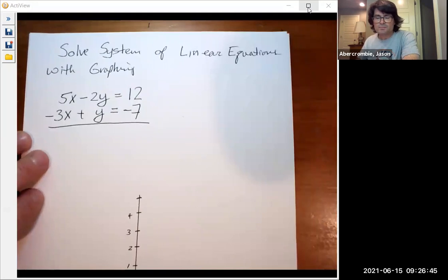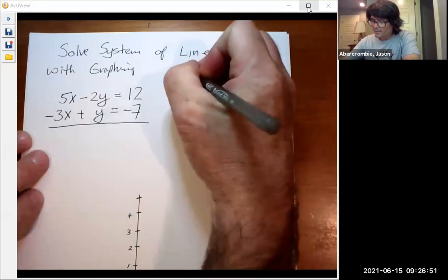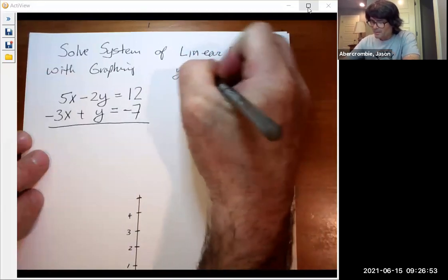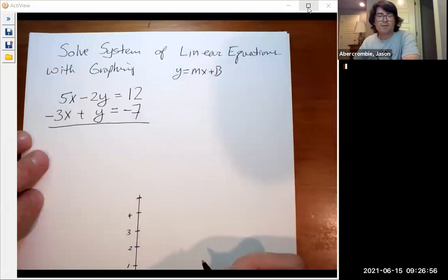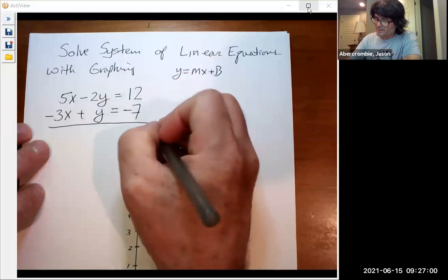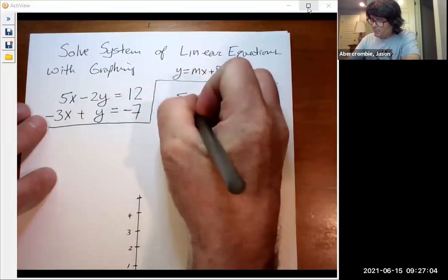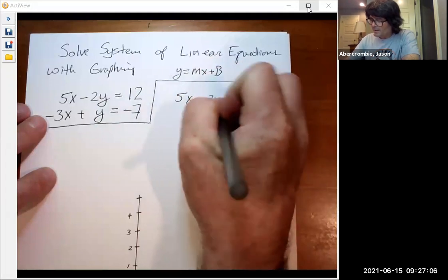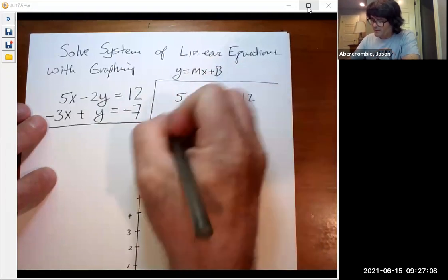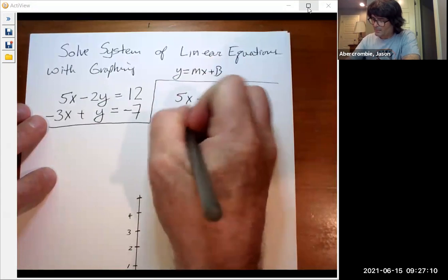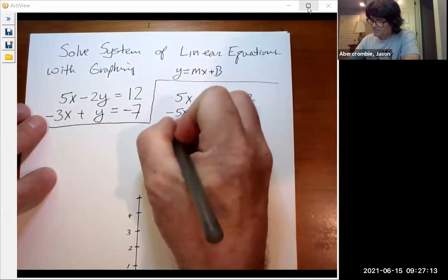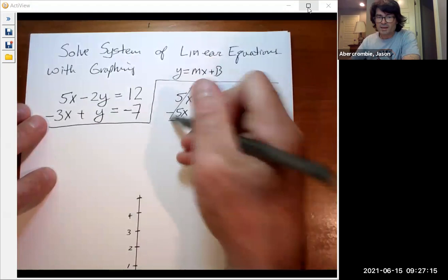Your first step is to get these in a format where you're comfortable graphing them, and I recommend y equals mx plus b. That's not your only choice, but that's my choice. So I want to take the first equation, we'll just box this off and solve it for y. To do that, I'm going to take away 5x from both sides to get the y term by itself.